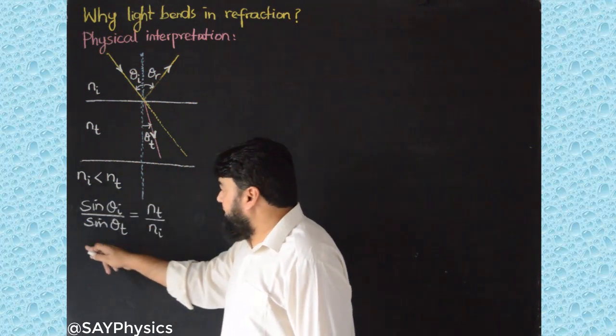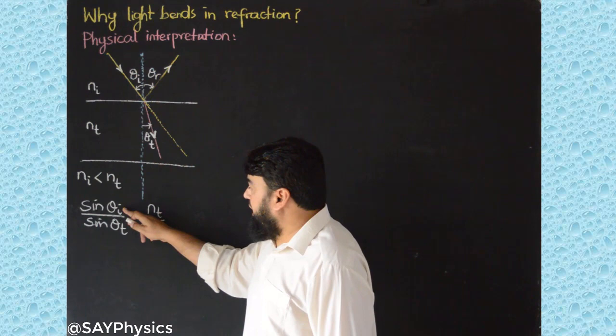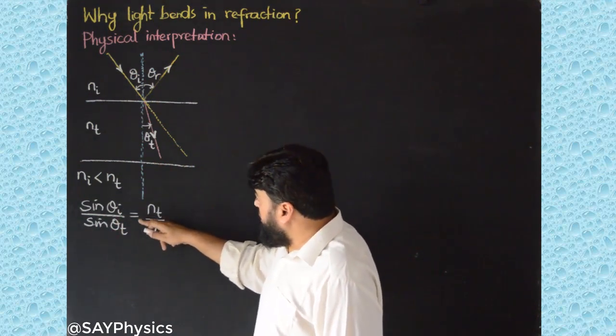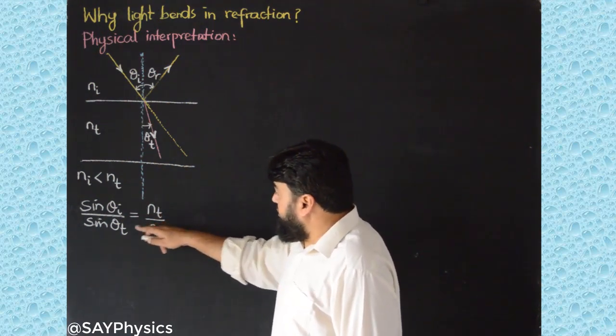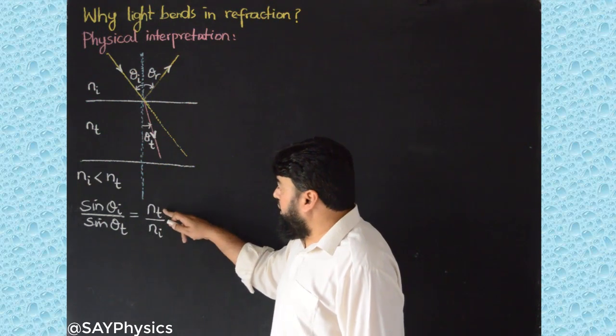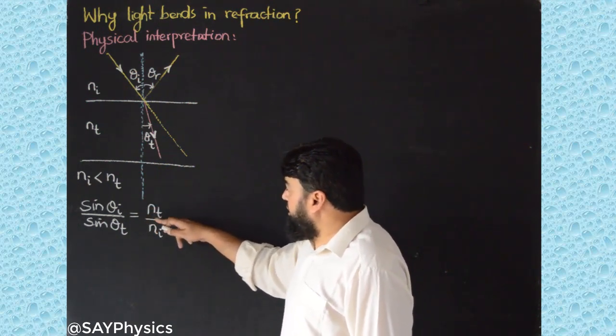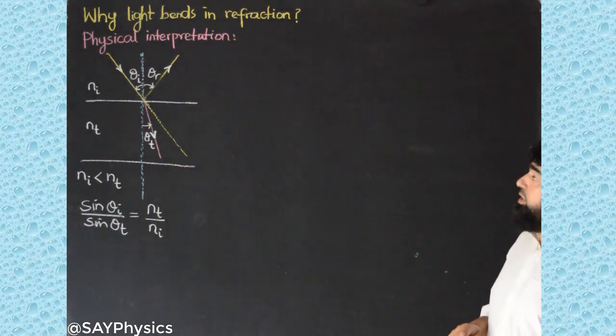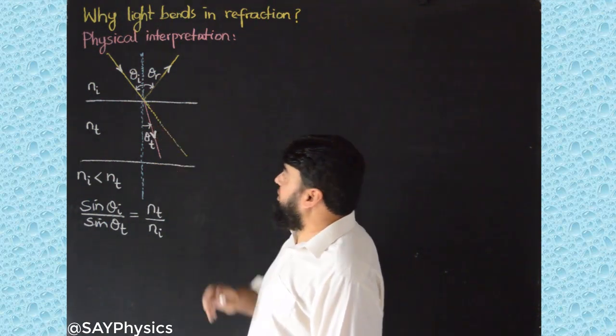Snell's law is telling us that the ratio of the incident angle with the transmitted angle or refracted angle is equal to the ratio of their refractive indices, but they will be the cross one. This is the refractive index of the dense medium and this is of the rare medium. Now what is the physical phenomenon which is occurring here which bends this light?